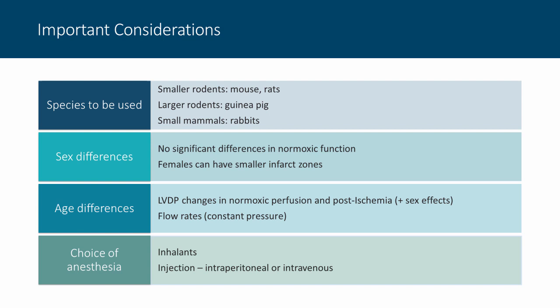Important considerations when designing experiments include species selection. There's a lot of work done in smaller rodent models — mainly mouse and rat — mainly due to low cost of housing, though challenges exist in the size of the vasculature for cannulation. Alternatively, larger rodents like the guinea pig or small mammals are a popular choice. The advantage is significantly larger vasculature; however, handling effects are more important with rabbits, which don't like being handled, and the cost per animal is vastly more expensive than smaller rodent models.